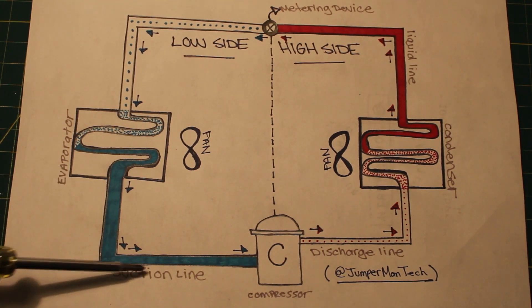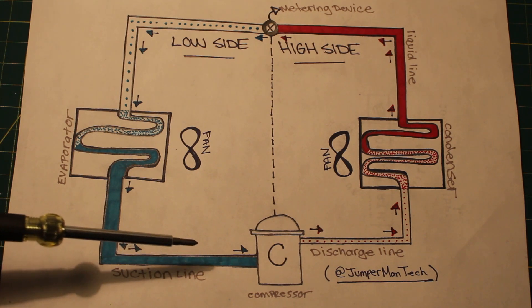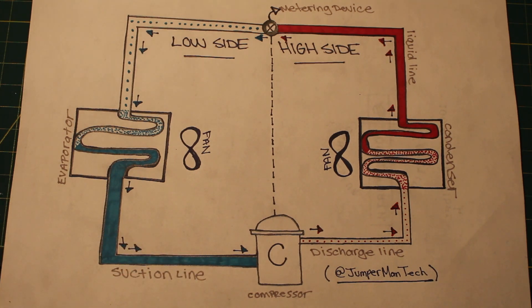The suction line then enters the compressor, and the cycle repeats. And there you have it. That is our refrigeration cycle.